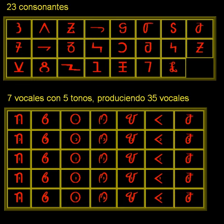The Basa alphabet was added to the Unicode standard in June 2014 with the release of version 7.0. The Unicode block for the Basa alphabet is U+16AD0 to U+16AFF.